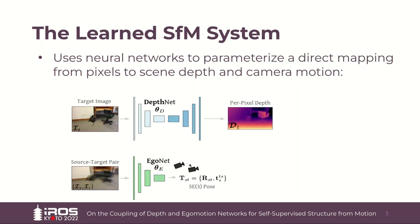More recently, the structure from motion problem has been reformulated as an end-to-end learning problem where neural networks parameterize a direct mapping from pixels to scene depth and camera motion. This learned SFM system consists of two separate networks: a depth network that outputs a per-pixel depth prediction for a target image, and an ego-motion network that takes the same target image along with a nearby source image as input and outputs the six degree of freedom pose change between frames.